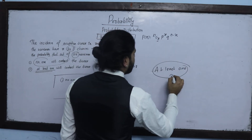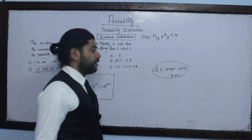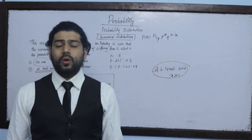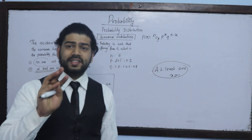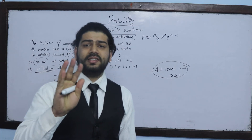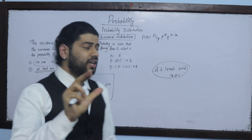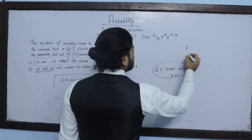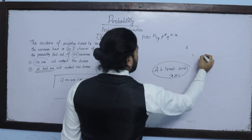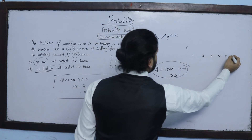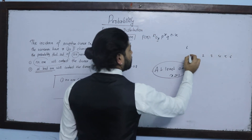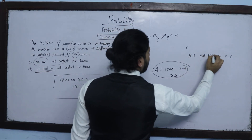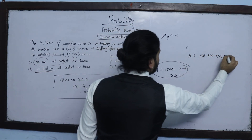The x-value is greater than or equal to 1. If X equals 1, 2, 3, 4, 5, or 6, the total is 6. So we consider 1 minus the complement.